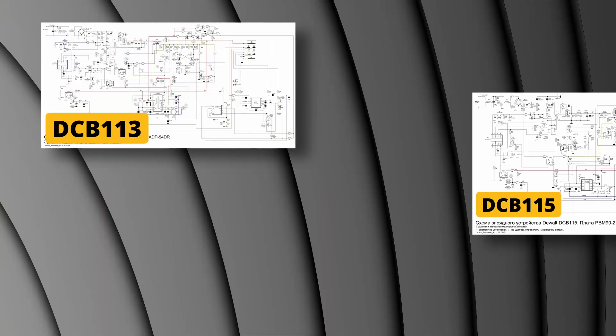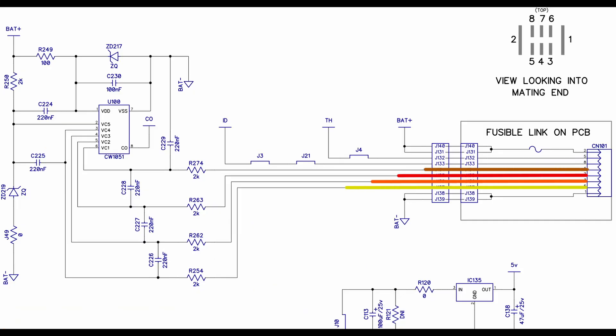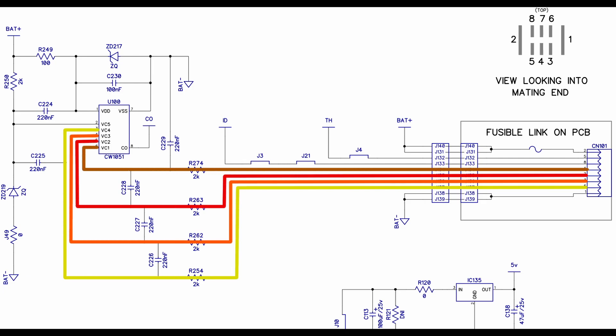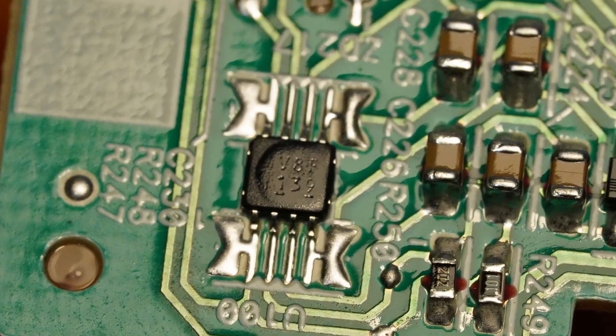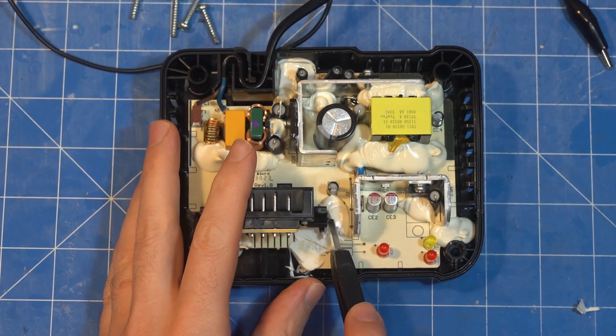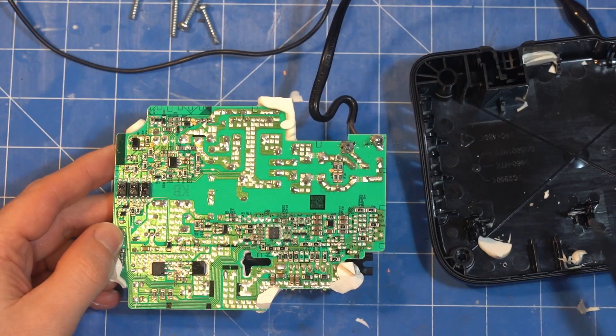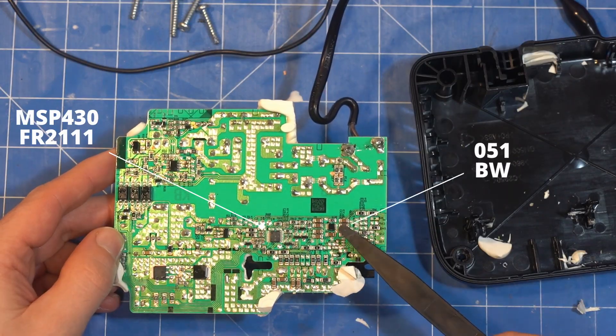I found circuit diagrams for 3 DeWalt chargers and none of them have circuitry for balancing. The cell pins only go into this small chip which is marked as V8F and seems to be an overvoltage chip like on the batteries. I took apart my DCB1104 which required hacking away at the silicone and found no balancing chips. Just a microcontroller and another chip that's probably overvoltage.